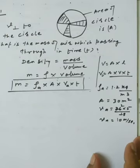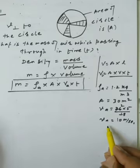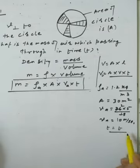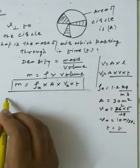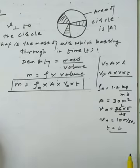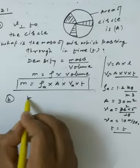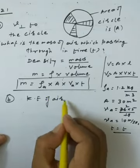Time T is kept as T. After substituting all parameters, we get the mass of air. Part (b) asks: what is the kinetic energy of the air flowing through the circle?